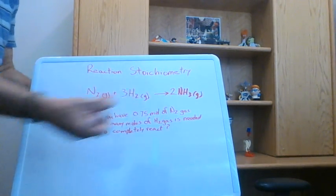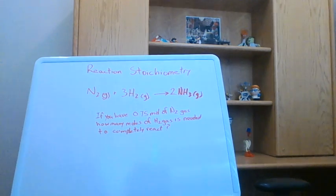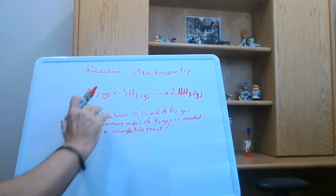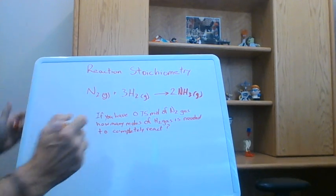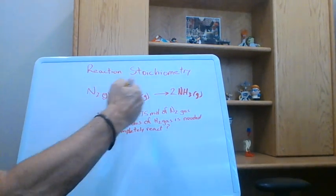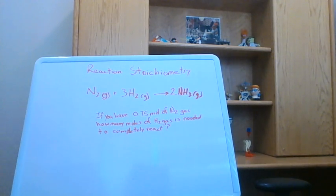So it's the coefficients in front that tell us the relationship between everything in the balanced chemical equation. So using those coefficients, then we can create a bunch of conversion factors to convert from moles of one thing to moles of something else in the equation.